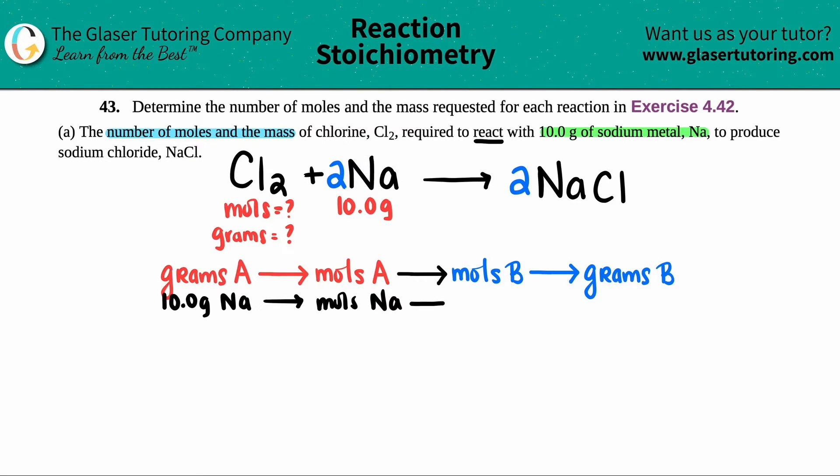And then from there, now I convert to the compound that I want. That's the B guy. So it would be moles of Cl2. And then from there, since they want both of them, I can get grams of Cl2. Okay, now let's actually do these steps. This is all going to be dimensional analysis. It's the easiest way to do it. And I got you guys, so don't worry about that.